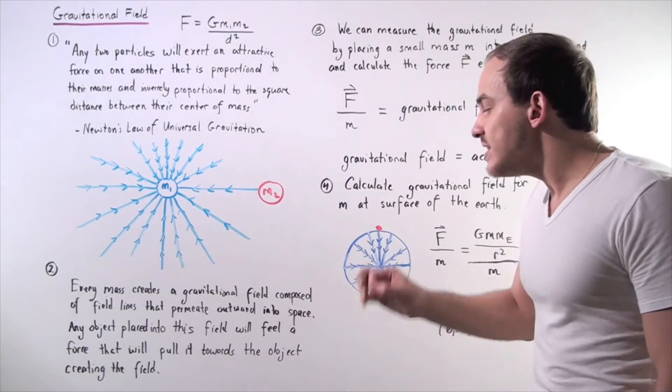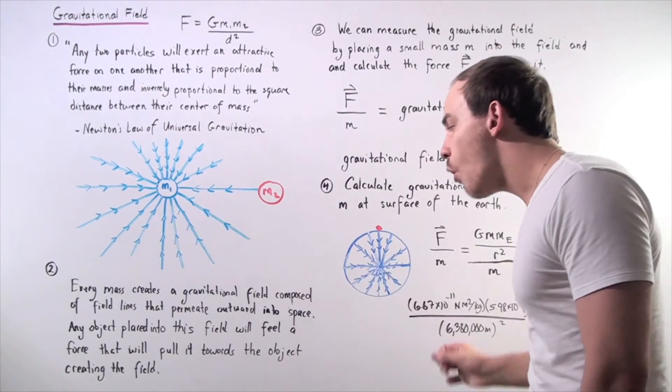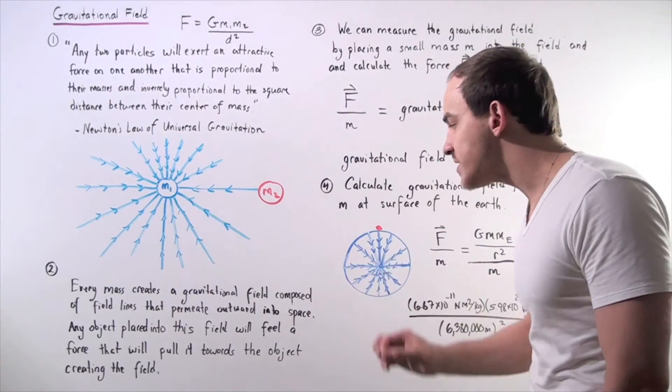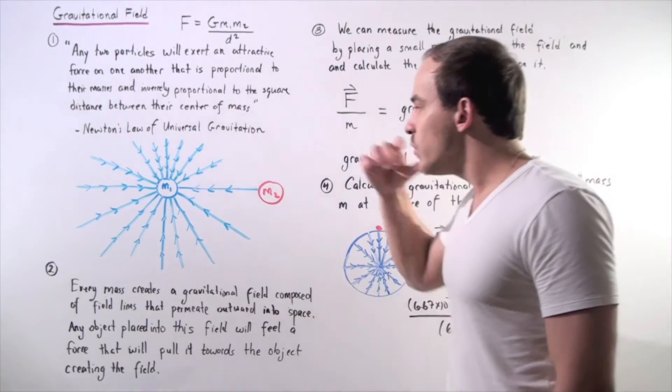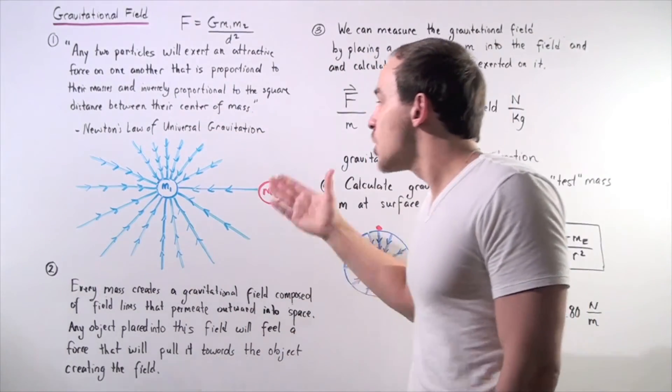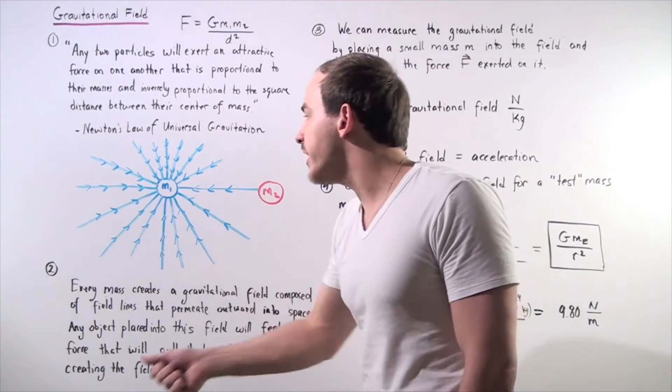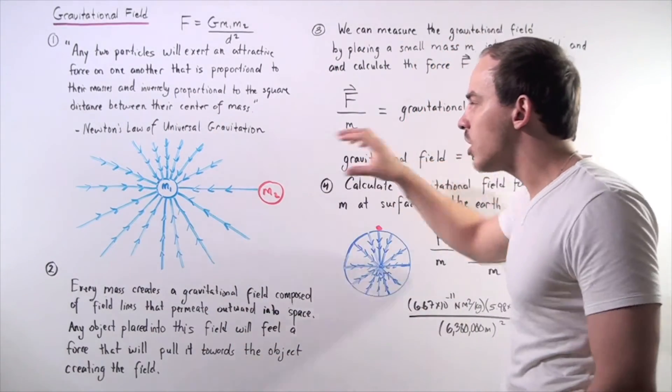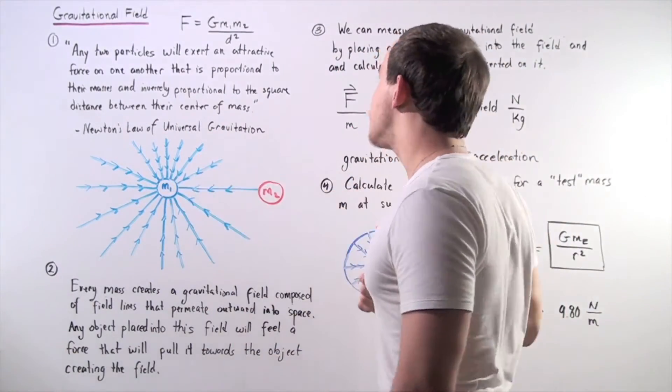Any object placed into the field will feel a force that will pull it towards the object creating the field. So, we have the Earth creating this gravitational field pulling other objects, such as our marker, towards the center of the Earth.